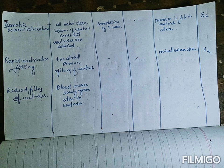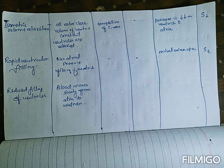After isovolumetric relaxation, blood is released and the ventricles are relaxed. To continue the cycle, rapid filling of the ventricle occurs again. Atrial pressure increases and becomes greater than ventricular pressure, causing the AV valve to open, and rapid filling of the ventricle begins once more. This is followed by slow (reduced) filling, where blood moves slowly from the atria to the ventricles.